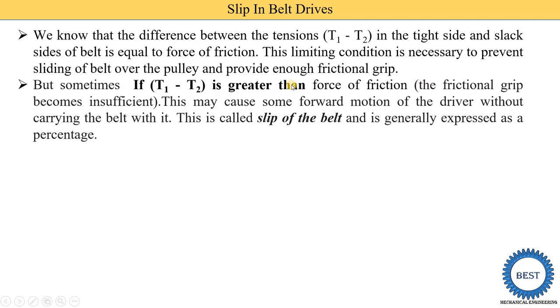When slip occurs, T1 minus T2 is greater than the force of friction, and only the driving pulley rotates but the belt does not rotate. When the belt is not rotating, the driven pulley is also not rotating.